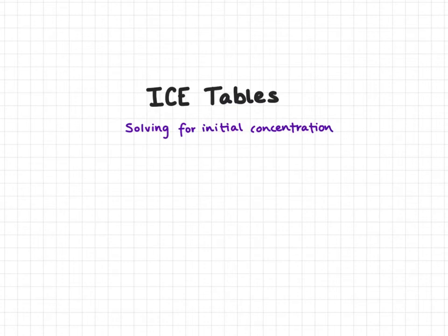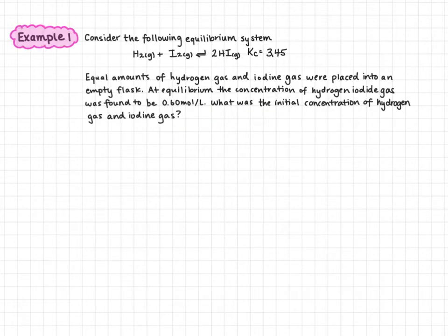In this video we're going to look at ice tables and solving for the initial concentration of one or more reactants. In this example we're going to look at the following equilibrium system: hydrogen gas plus iodine gas in equilibrium with hydrogen iodide gas, and we have a Kc value of 3.45.